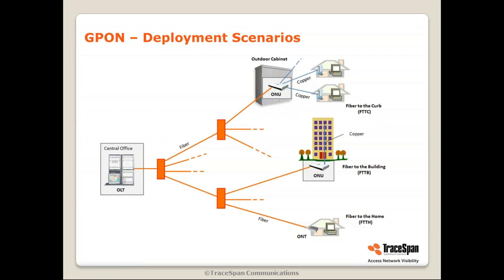There's also a new term called fiber to the distribution point, FTDP, which can be either fiber to the building or fiber to the curb. The distribution point usually has some different characteristics and is located close to the customers. This is beyond the scope of today's video.